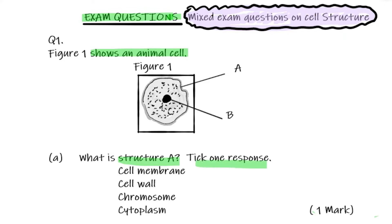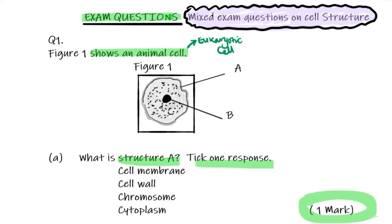Exam question: Figure one shows an animal cell. What is structure A? Before we do the question, let's do a quick recap. An animal cell is a type of eukaryotic cell. The other eukaryotic cell we learned about was the plant cell.